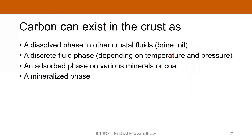Carbon can exist in the crust as a dissolved phase in crustal fluids — it can be dissolved in brine just like it dissolves in water, or dissolved in some oils. You can store it as a discrete fluid phase — gaseous CO2, or liquid or supercritical CO2, depending on temperature and pressure. You can store carbon as an adsorbed phase stuck on the surfaces of various minerals or in coal — unminable coal seams are a great way to store CO2. Or we can store carbon as a mineralized phase, using it to precipitate new minerals in the subsurface.